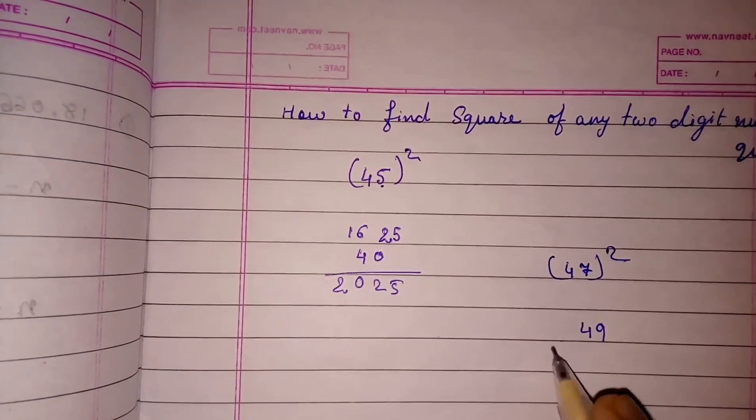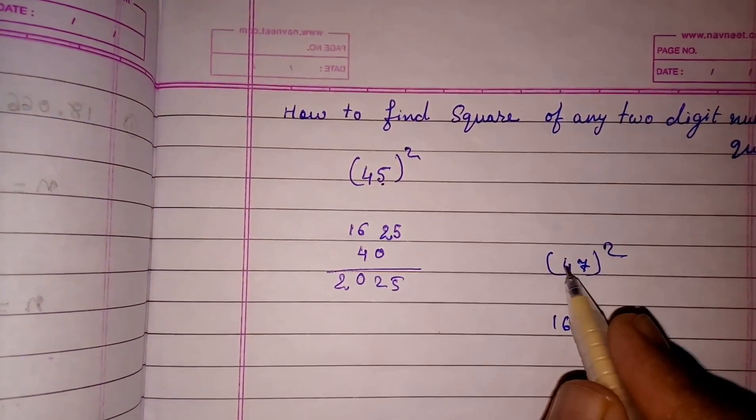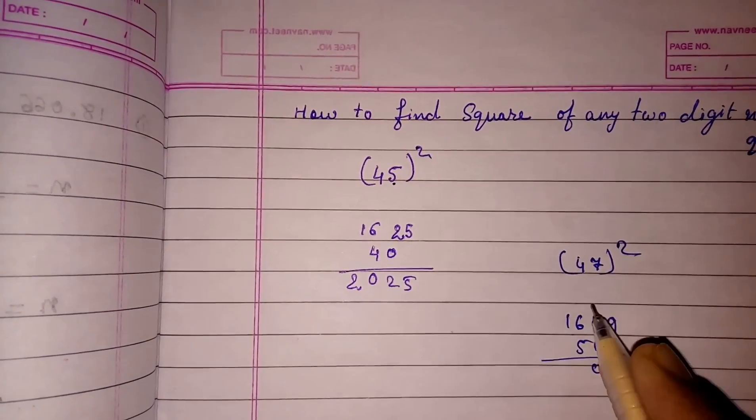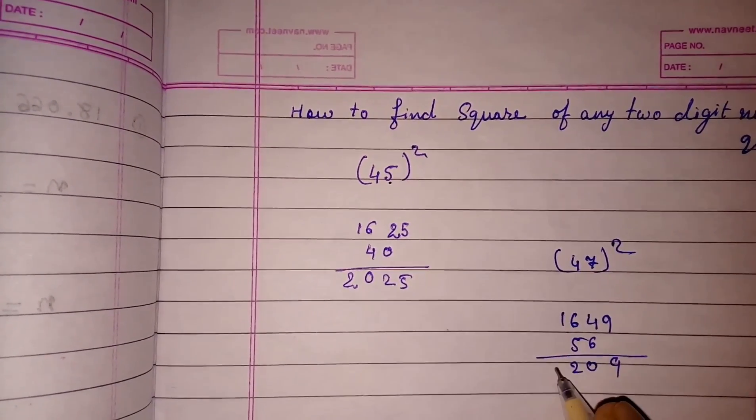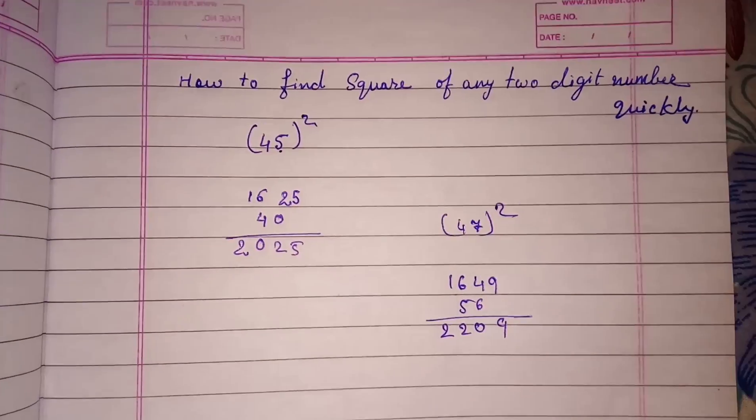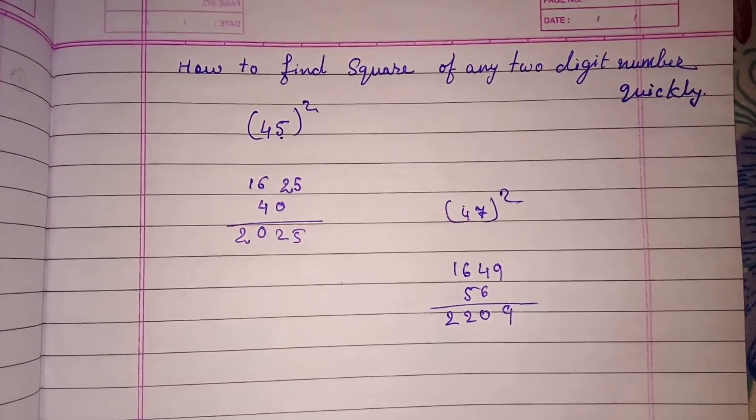Suppose we have to find square of 47. So 7 square is 49, square of 4 is 16. 4 times 7 is 28, 28 times 2 is 56. 9 plus 6 is 15, 1 carry, 4 plus 5 plus 1 is 10, 2 carry, 1 plus 1 is 2. This is very easy but you have to do a lot of practice for this.